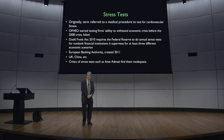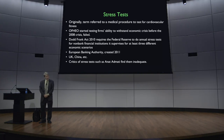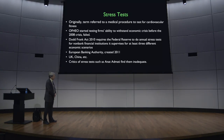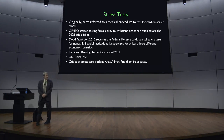The Dodd-Frank Act didn't specify what the three different scenarios were, but said there should be at least three. This is scenario analysis — something we won't emphasize in this course because it involves more institutional details. The European Banking Authority, created in 2011, has also instituted regular stress tests for European banks, and the United Kingdom, China, and other countries all do stress tests now.